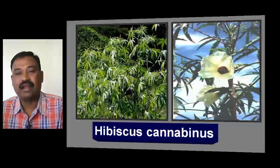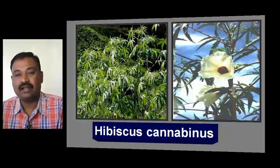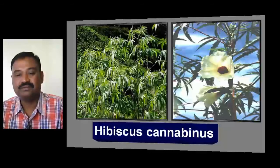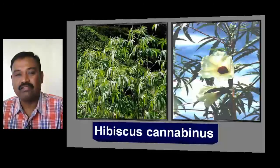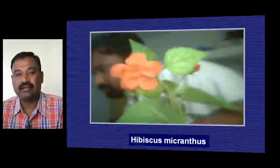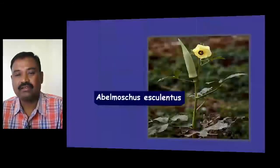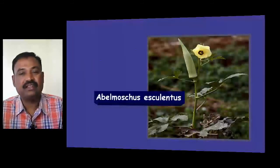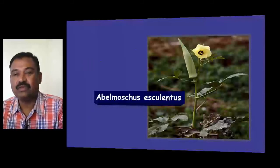Hibiscus cannabinus — common name is Deccan hemp. Leaves are used as a vegetable, and it is a fiber-yielding plant of Malvaceae. Hibiscus micranthus is an ornamental plant. Abelmoschus esculentus — common name is Lady's Finger — is a vegetable-yielding plant.